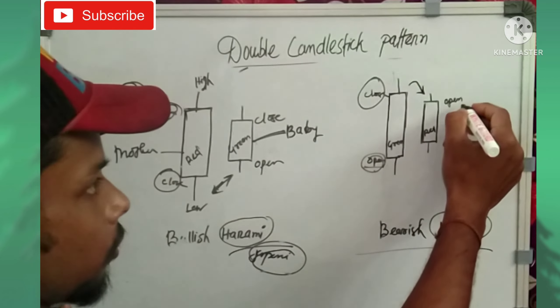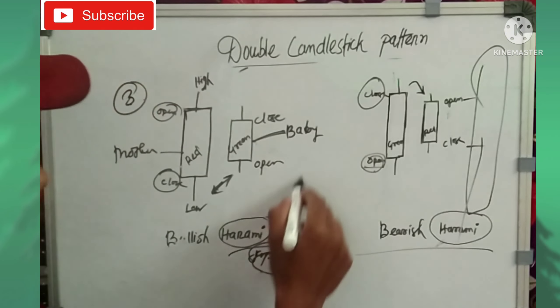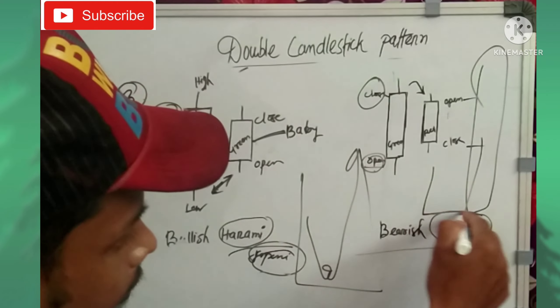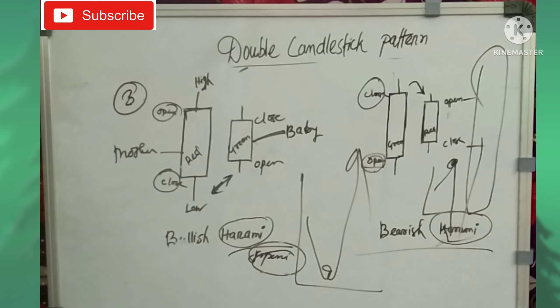The gap up opening and close levels are our targets. This pattern typically forms at the bottom of a trend signaling a reversal. We can profit by trading the reversal of the trend.